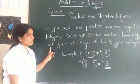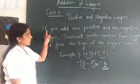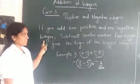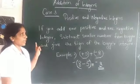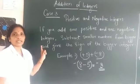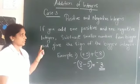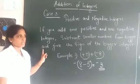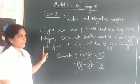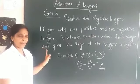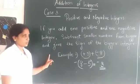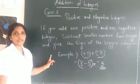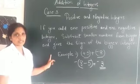Understood? So you should learn this statement: to add one positive and one negative integer, we must subtract the smaller number from the bigger, and put the sign of the bigger integer.